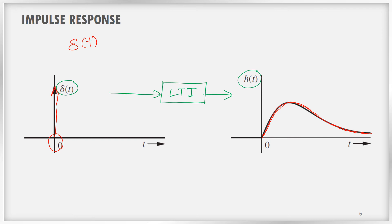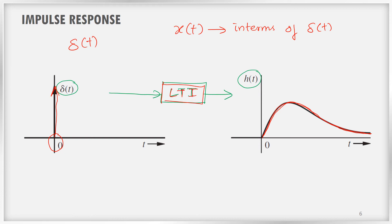Why do we want to study this? We have represented our signal x(t) in terms of δ(t) — that is, in terms of impulse signals. Many impulse signals together represent our input x(t). Since our system is an LTI system obeying both superposition principle and time invariance, we can represent y(t) in terms of h(t). So we can represent the output in terms of impulse responses. If you can represent a signal in terms of impulse, you can represent the output in terms of impulse response.